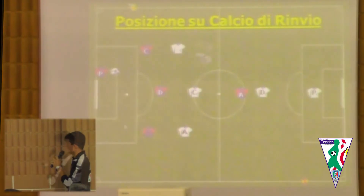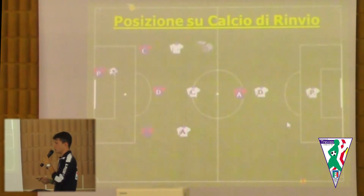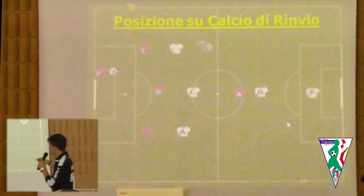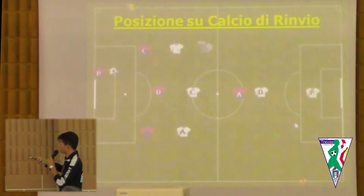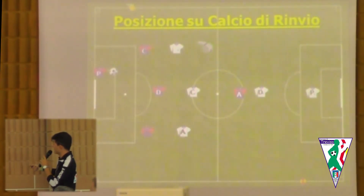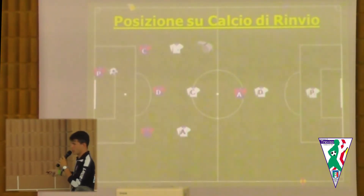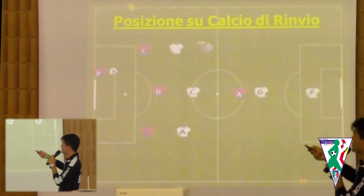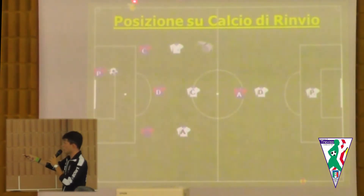Iniziamo ad adattare il nostro spostamento in funzione di un possibile utilizzo di sistemi ufficiali: prepariamo una possibile diagonale, soprattutto posizioniamoci da questa parte. Se il portiere rilancia qui, posizioniamoci qui. Alcuni si mettono dall'altra parte, ed è sbagliato: quando dovessimo avere la fortuna di avere un assistente ufficiale, il nostro posizionamento deve essere questo per avere sempre l'assistente nel nostro campo visivo.